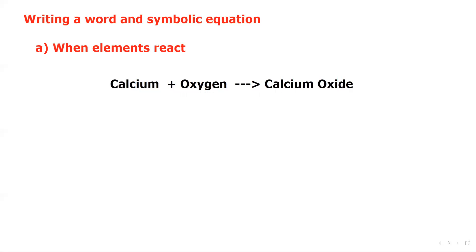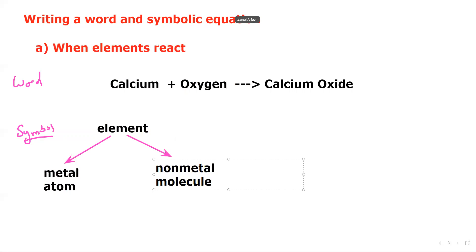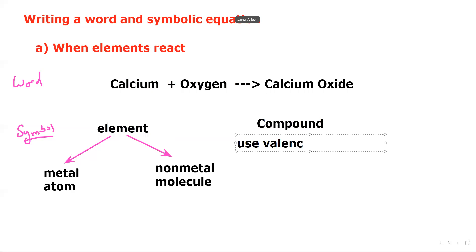Now we want to write a symbolic equation. When writing a symbolic equation for an element, you must check whether the element is a metal or a non-metal. If the element is a metal, you write the symbol as an atom. If the element is a non-metal, you write it as a molecule, except for group 4 and group 8. If a substance is a compound, you use valencies to write the formula.